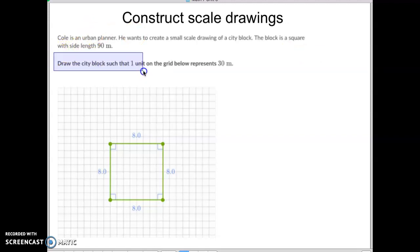We have to draw a city block knowing that one unit, just one of these little units, this little unit right here, represents 30 meters. So if you think about it, here's 30 meters, 30 more, 30 more going this direction, and then 30 more, 30 more going that direction. So it's got to look like that, if that makes sense.